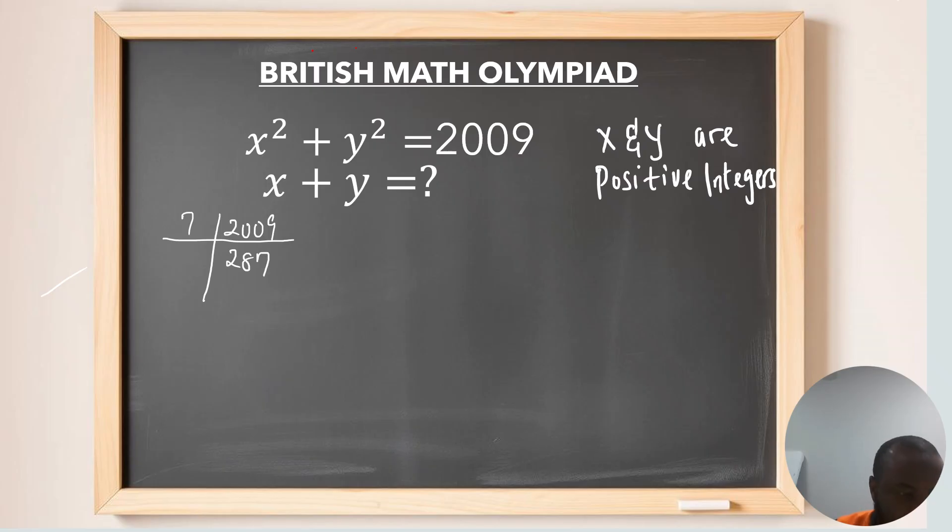Now, another factor, let's see, 7. This is going to be 41. 41 is a prime number, so the next factor is going to be 41, which is 1.